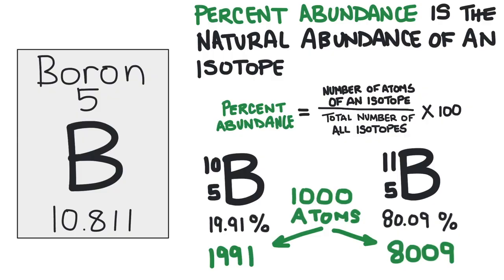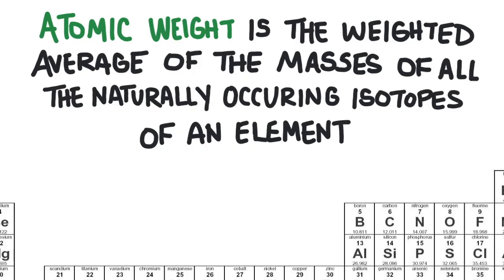This is where atomic weight comes in. That's this number on the periodic table. It's the weighted average of the masses of all naturally occurring isotopes of that element.